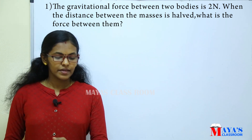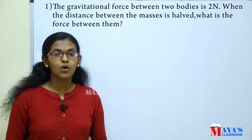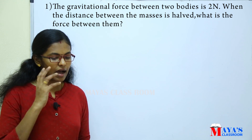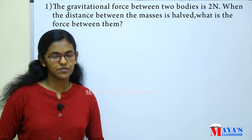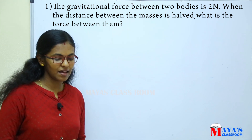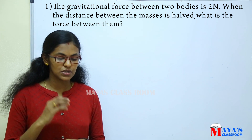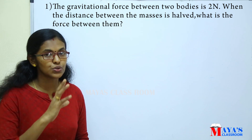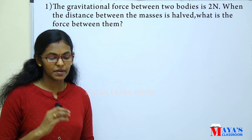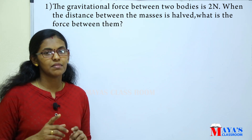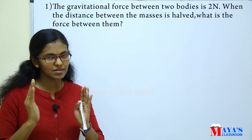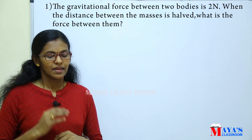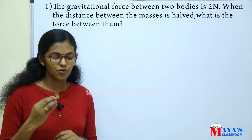The question is: the gravitational force between two bodies is 2N. When the distance between the masses is halved, what is the force between them?